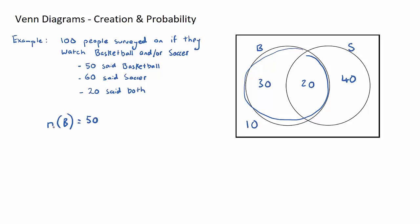Another common question would be, what's the probability of a randomly chosen person out of this survey watches soccer? Well, let's draw a circle around the soccer set. How many people are inside the soccer set? 40 plus 20 is equal to 60. And then because it's a probability, we divide by how many people were surveyed, and that is 100. And that is equal to 6 on 10, which is 3 on 5.